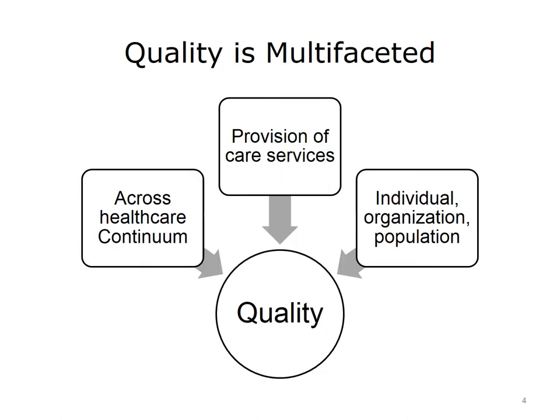Both definitions cover the overarching spectrum of quality in health care, providing optimal care to all patients that achieves the expected outcomes. These definitions encompass quality as a multi-faceted outcome that occurs across the health care continuum, where provision of care services is key. Quality can be measured at the individual, organization, and population level.